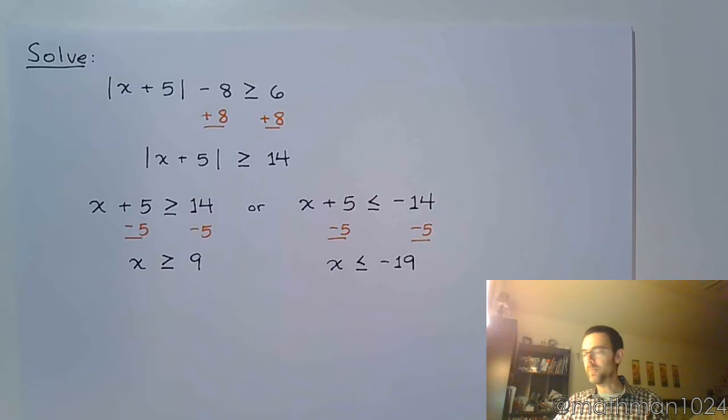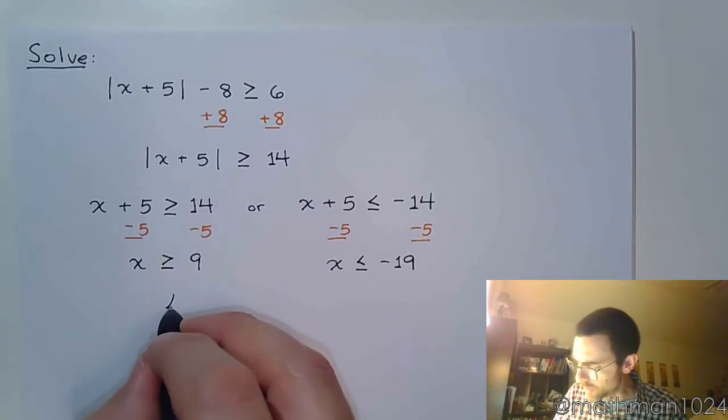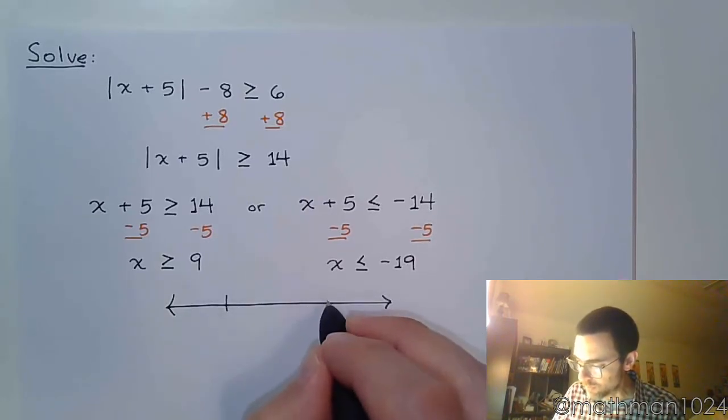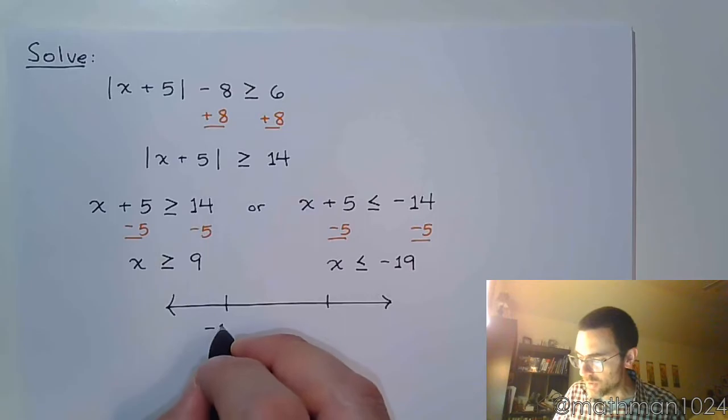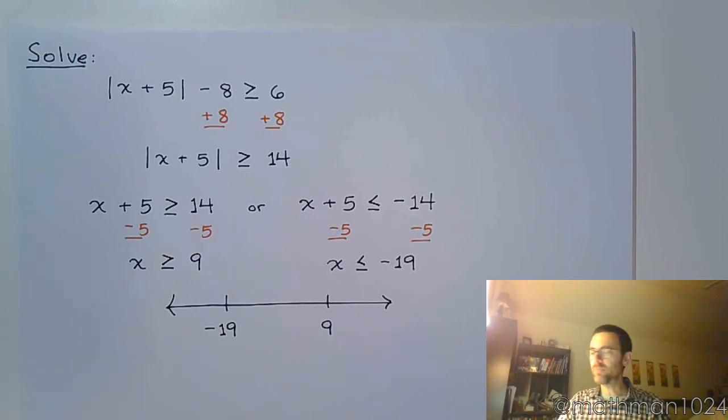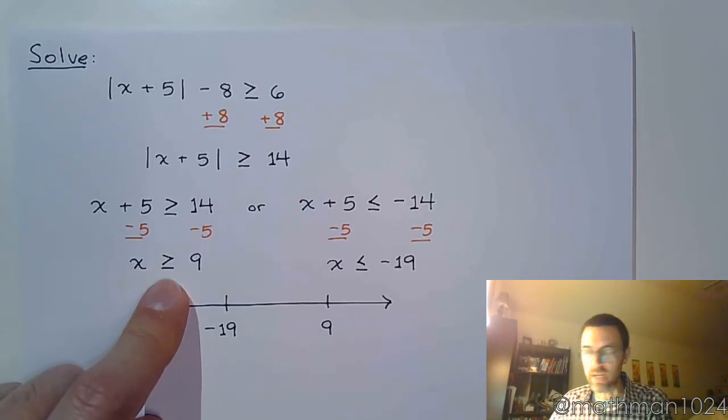Let's put this on the number line so we can see exactly what we're talking about. Make sure that you maintain the order of the real numbers on the number line, so it's negative 19 on the left, positive 9 on the right side.